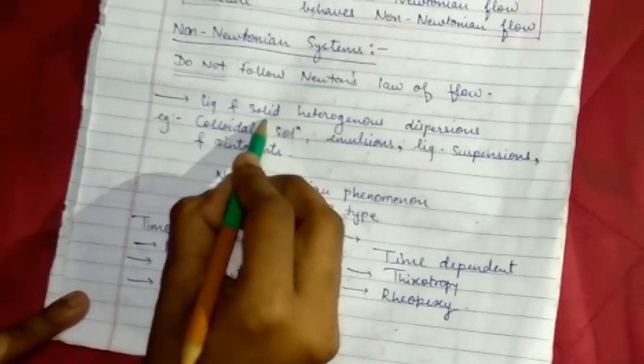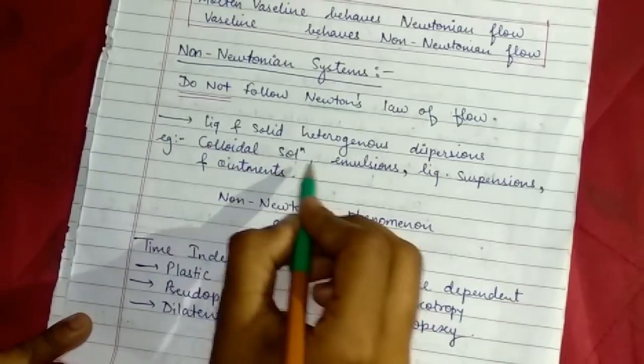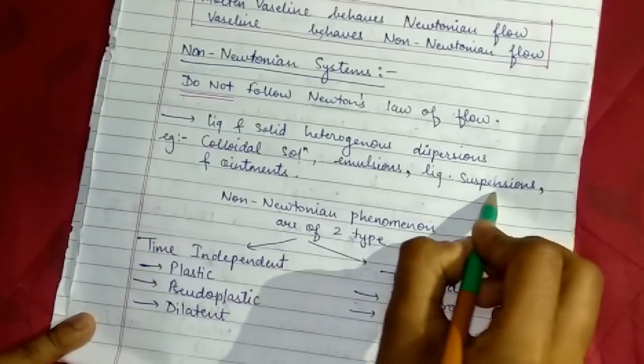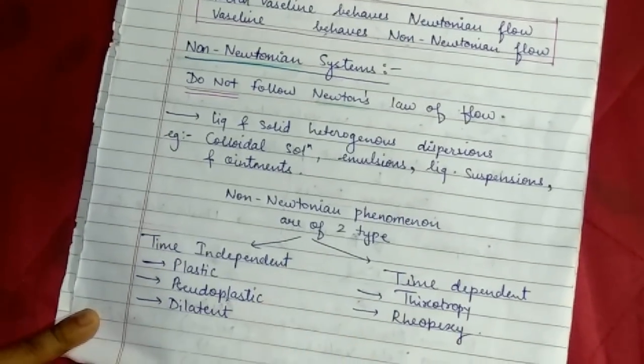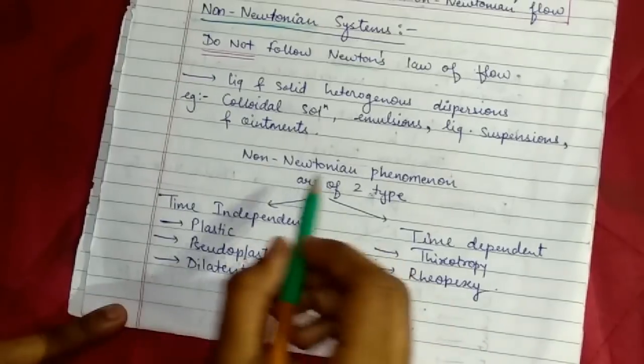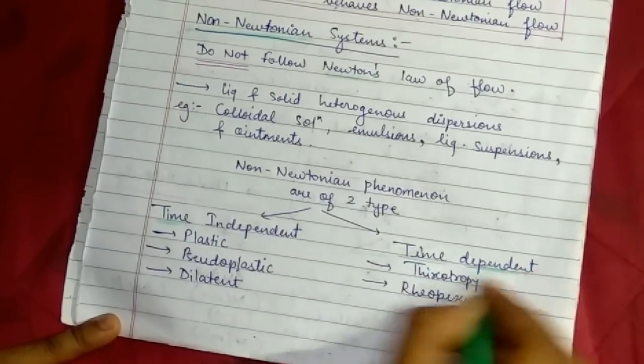Liquid and solid heterogeneous dispersions, colloidal solutions, emulsions, suspensions, and ointments follow non-Newtonian system. There are two phenomena or types of non-Newtonian system: time-independent and time-dependent.